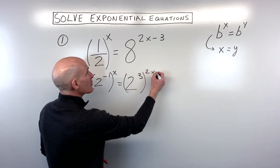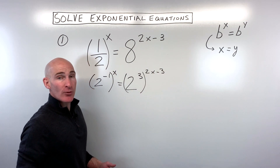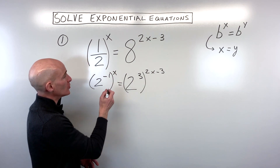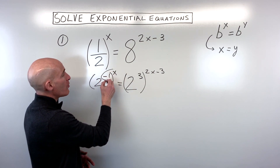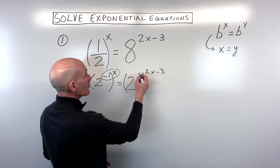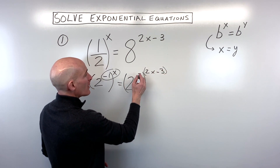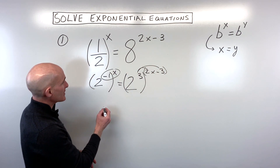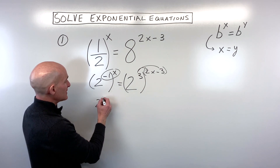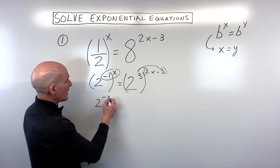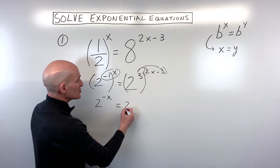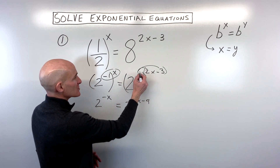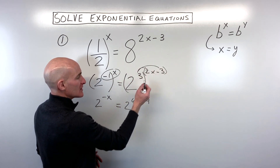Here is where we have to use our rules of exponents. When you have a power raised to another power, you multiply those exponents together. Here we're going to distribute. So we get two to the negative one x is equal to two to the six x minus nine — we're just multiplying the three into the parentheses.